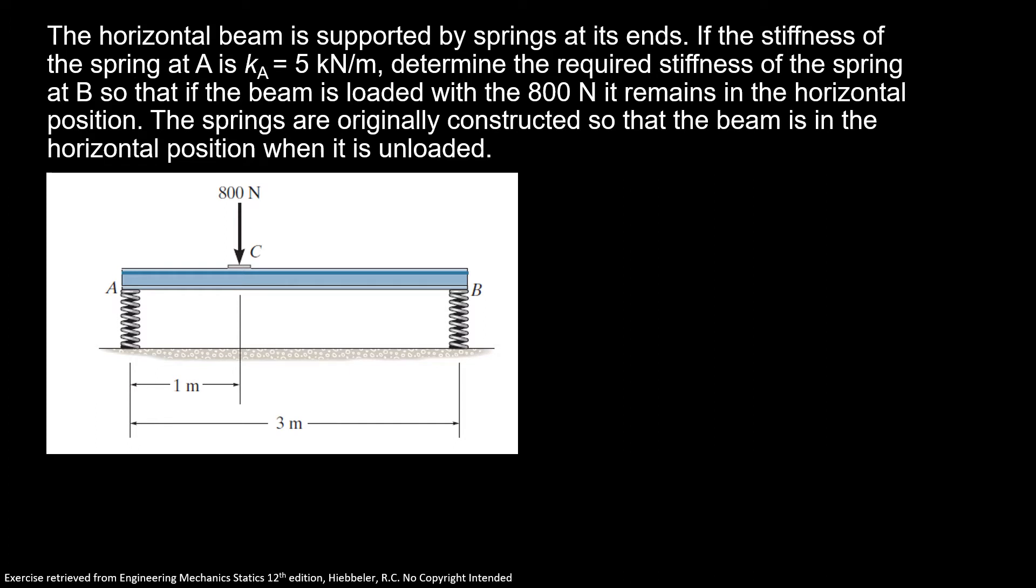So if you want for that beam AB to remain in the horizontal position, we know that the displacement at A has to be the same as the displacement at B. Now we're going to find our normal reactions at A, which I'm going to call normal A, and here normal B.